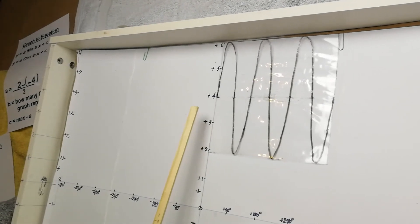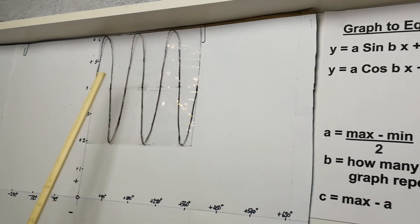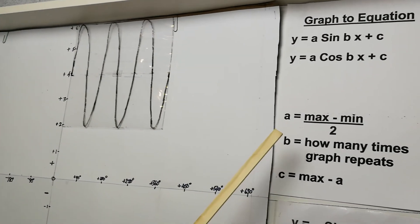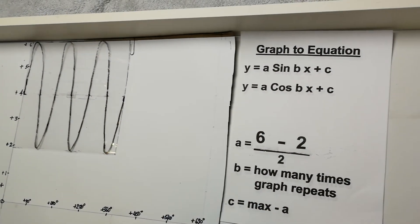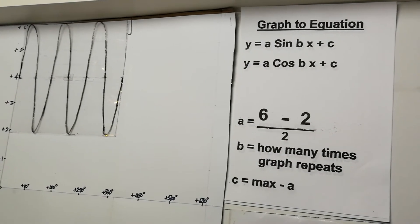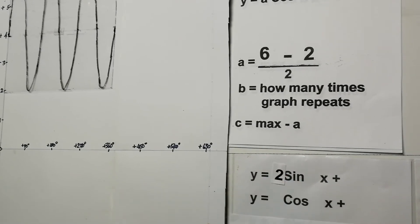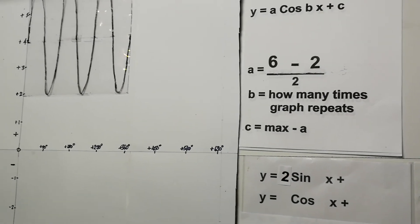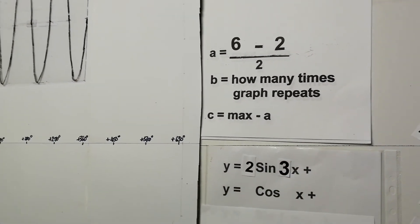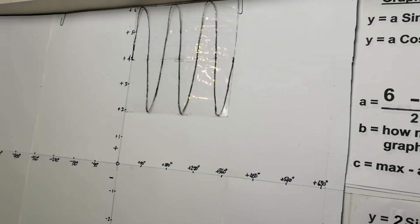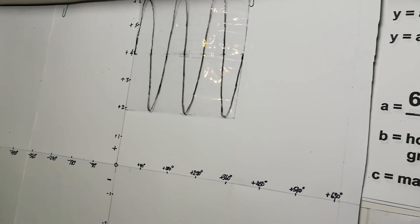Next graph: it starts in the middle, so this is a sin graph. For the a value — the distance from center to top, or using the formula: maximum is 6, minimum is 2, so 6 − 2 = 4, divided by 2 = 2. So a = 2. The graph touches the bottom 1, 2, 3 times, so b = 3.